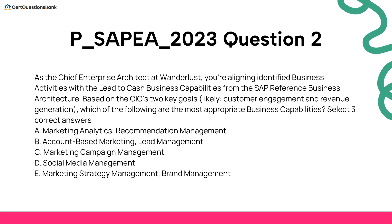As the Chief Enterprise Architect at Wanderlust, you're aligning identified business activities with the lead-to-cash business capabilities from the SAP reference business architecture. Based on the CIO's two key goals — customer engagement and revenue generation — which of the following are the most appropriate business capabilities? Select three correct answers.